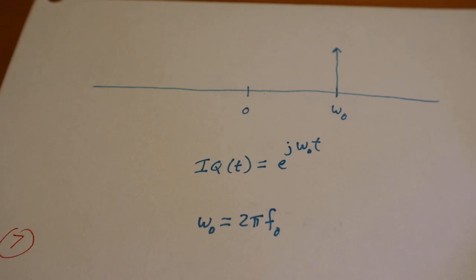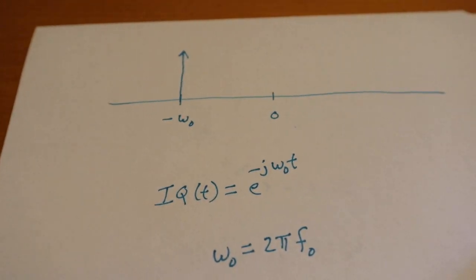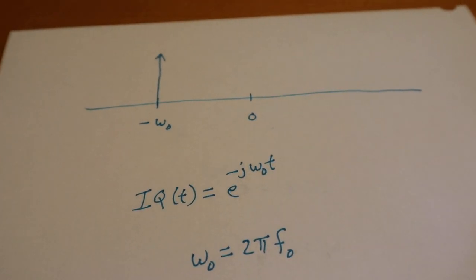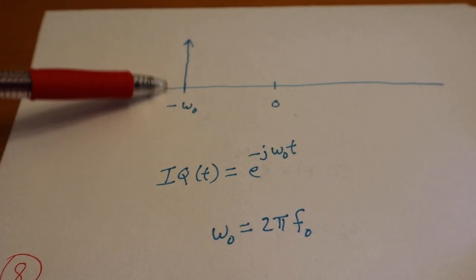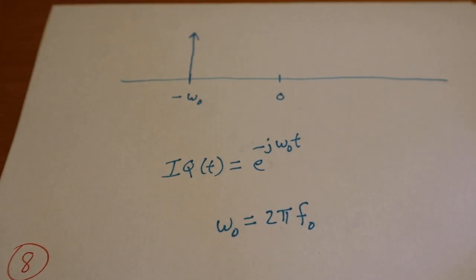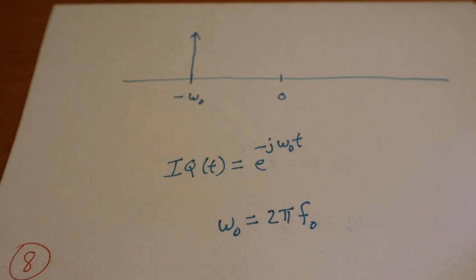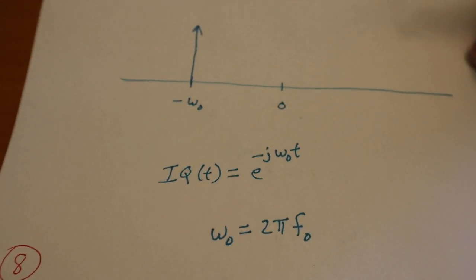And this is how we do a negative one: it's just e to the negative jω0t, and there you see the signal up there at ω0, negative ω0. So that's how you make these components—they're all based upon these guys. So that's the key right there: all these guys.